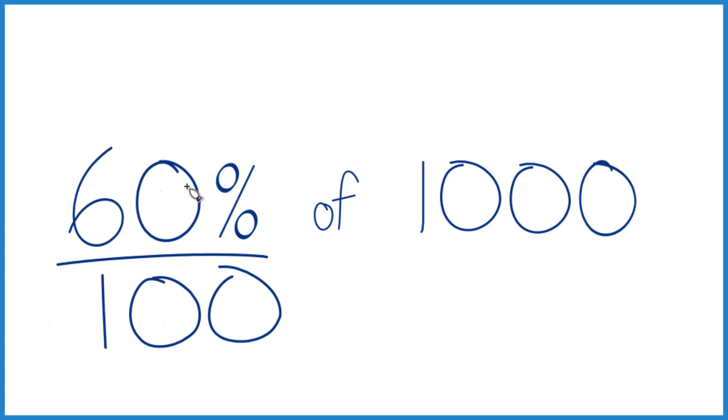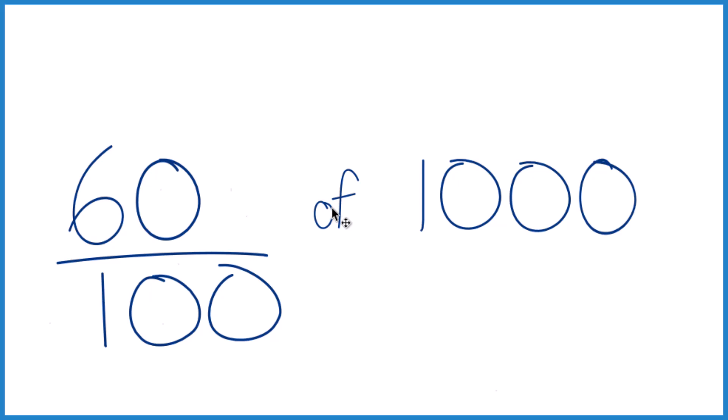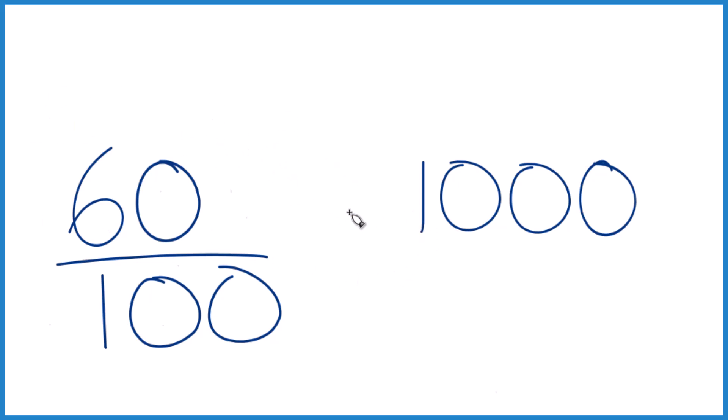You could say 60% is 60 per 100. And then of, we're just going to use multiplication. So let's call it 1,000 over 1. Still 1,000, but everything lines up nice.